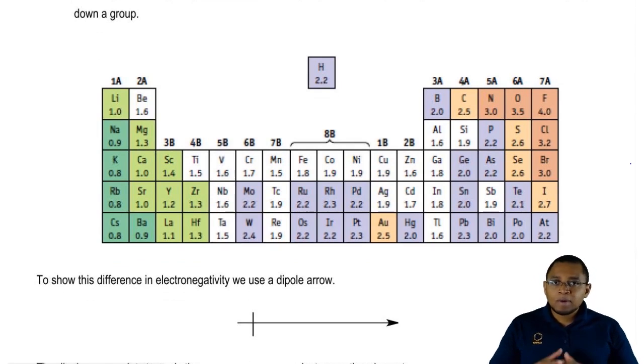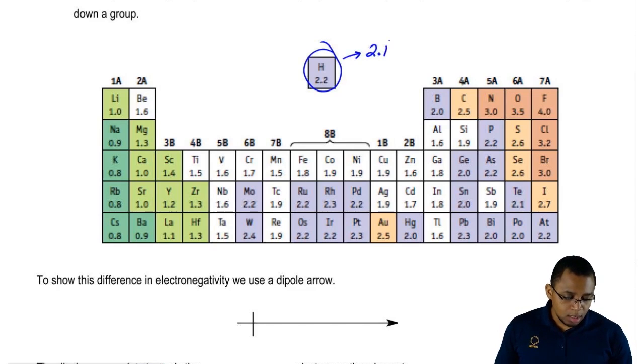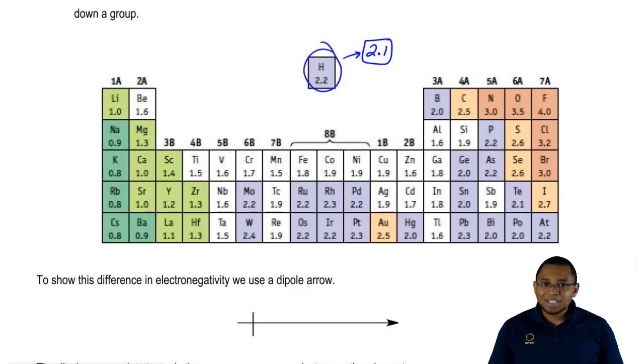Now of course, you don't have to memorize every single one but there are some that you should become familiar with. For example, hydrogen here is 2.2. Depending on which edition of your book you're using, some of you may see 2.1 also. Just realize that 2.1, 2.2, they're very similar like they're only off by 0.1, so if you go with either number, it's okay.